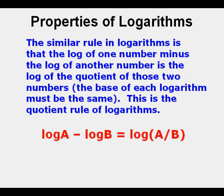The similar rule in logarithms is that the log of one number minus the log of another number is the log of the quotient of those two numbers, and the base of each logarithm must be the same. This is the quotient rule of logarithms: log a minus log b equals the log of the quotient a over b.